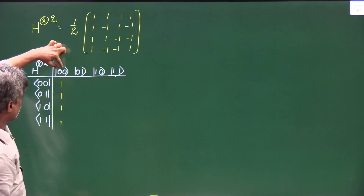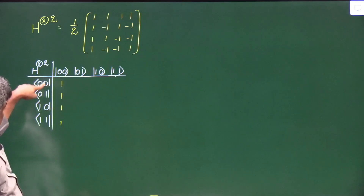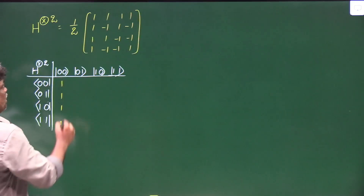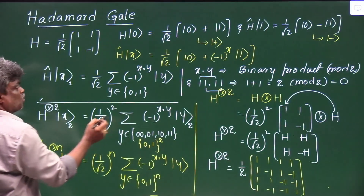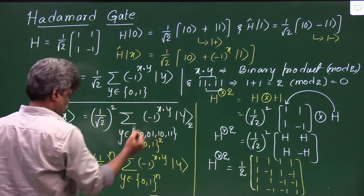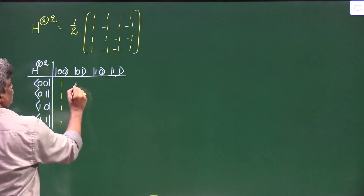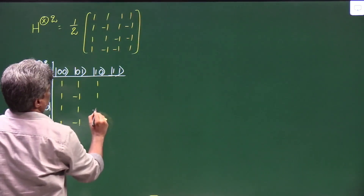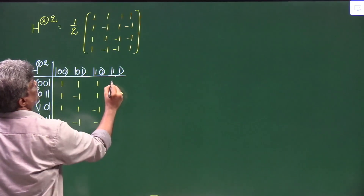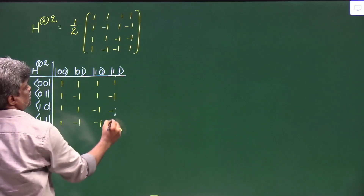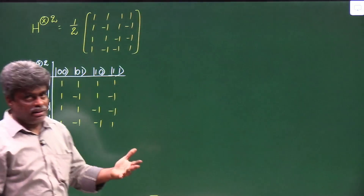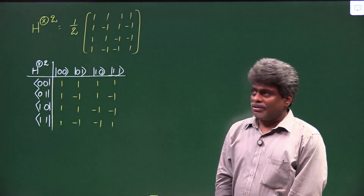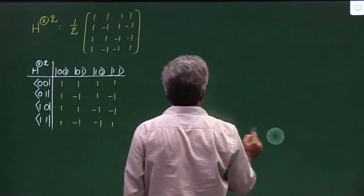So H⊗2 operating on |00⟩ gives a linear combination of |00⟩, |01⟩, |10⟩, |11⟩ with coefficients +1, +1, +1, +1. For |01⟩ the coefficients are +1, −1, +1, −1. For |10⟩ the coefficients are +1, +1, −1, −1. And for |11⟩ the coefficients are +1, −1, −1, +1. Now I am going to explain a small technique to write these coefficients directly without computing the tensor product.